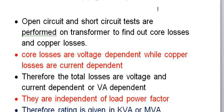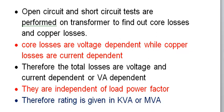When we say the losses are VA dependent, it means they are power factor independent — not dependent on the load power factor. The power factor of the transformer is governed by the load drawn through it, and it has no impact on the core losses or the copper losses. Therefore, transformer ratings are given in kVA or MVA.